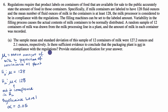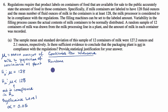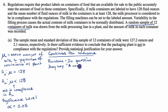Now we want to check our conditions for inference — to feel good that the sample we're using to make our inference is a reasonable one. The first is the random condition. They tell us it's a random sample of 12 containers of milk. In the question, they say 'a random sample of 12.' That meets the condition.